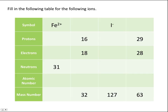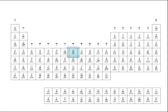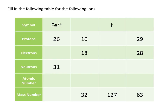Now let's fill in the following table for ions. Starting with the first column, Fe2+: all atoms of iron always have the same number of protons, and looking at the periodic table we see that iron has 26 protons, so the atomic number is also 26. Because our ion Fe2+ has a positive 2 charge, it must have lost 2 electrons, so this ion of iron must have 24 electrons. We calculate the mass number by adding the number of neutrons and the number of protons: 31 plus 26 gives us a mass number of 57.